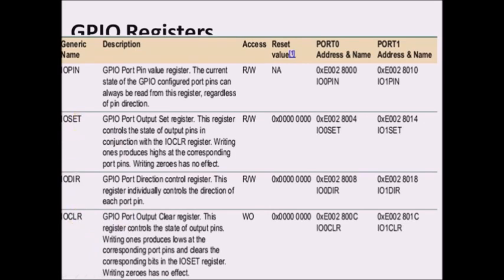To make a particular pin 0, you need to use another register — the IOCLR register. So for setting and clearing, we have two registers: IOSET and IOCLR. There is also the IOPIN register — the current state of the GPIO configured pin can always be read from this register regardless of pin direction. Whatever values you set in the IOPIN register are directly reflected on the pin.